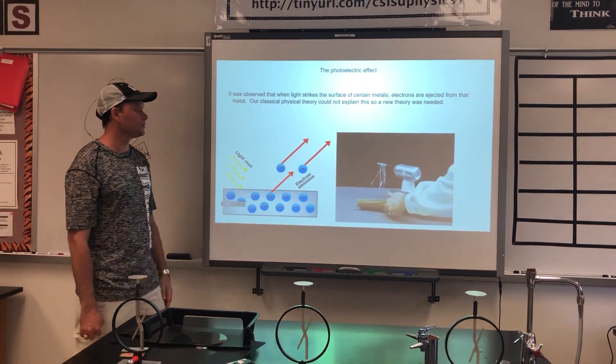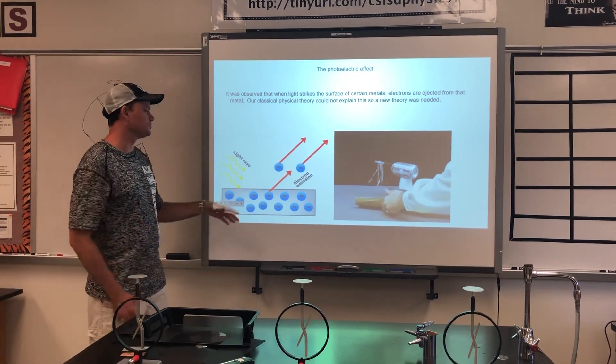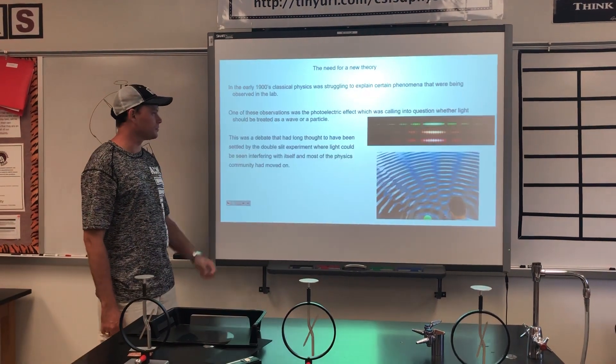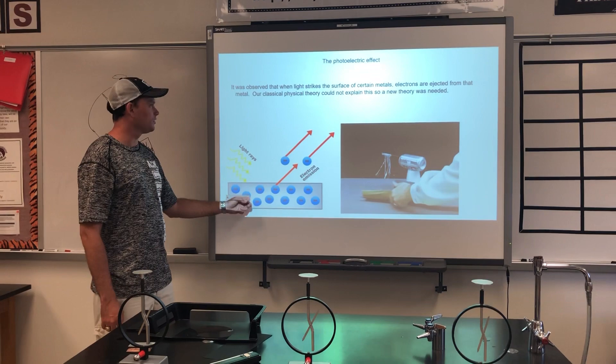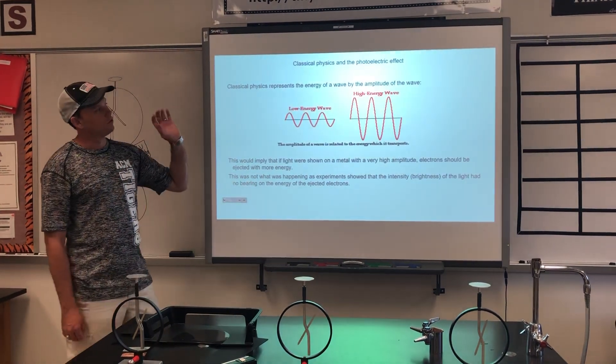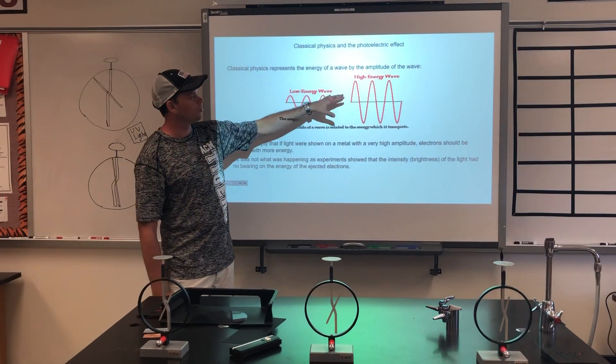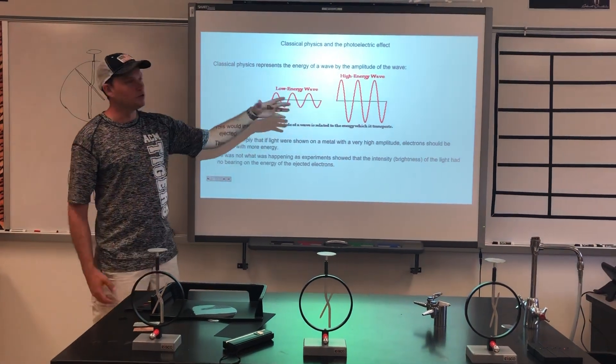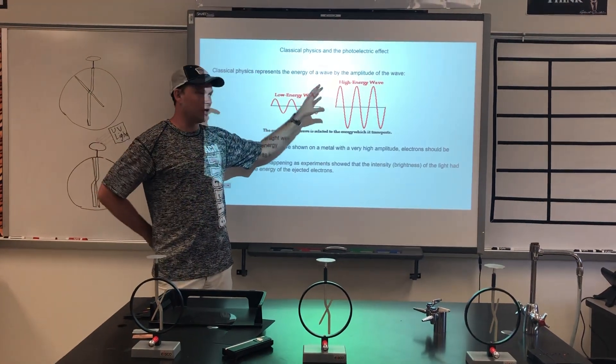So you have light strikes a surface, and on different surfaces with certain frequencies of light you could get electrons to eject. That did not jive with what was known about light at the time, which showed that the energy of light was based on its amplitude.